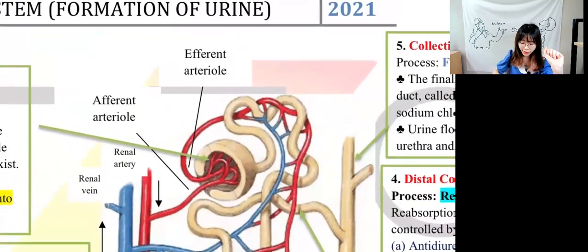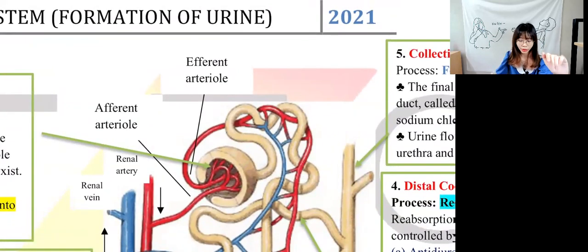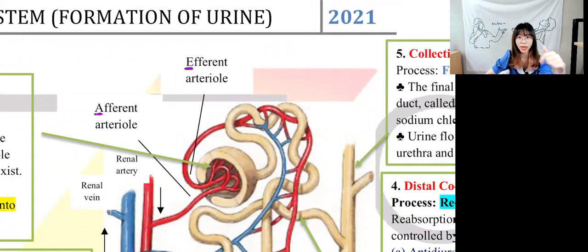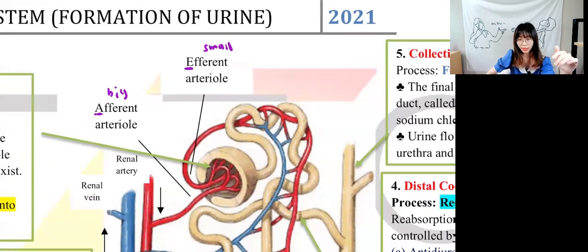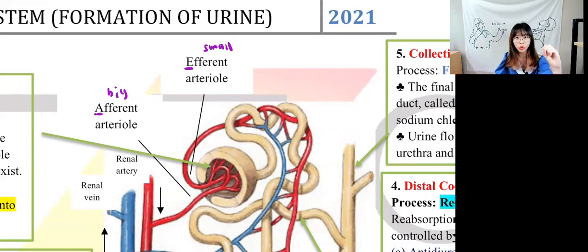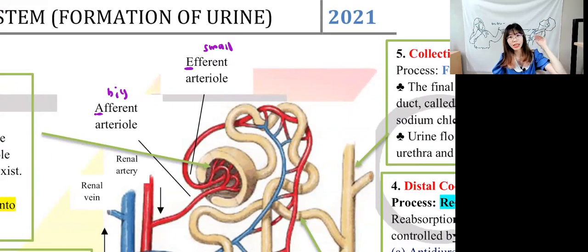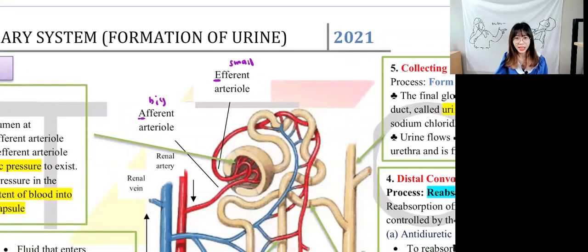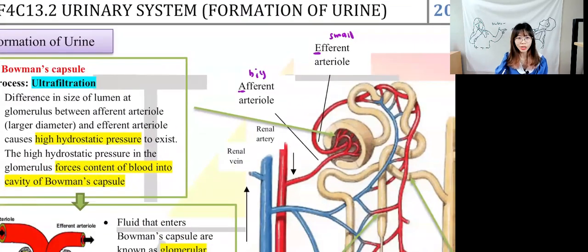The afferent arteriole comes first and is bigger in lumen size. The efferent arteriole comes next and has a smaller lumen. Because of this change from a bigger lumen to a smaller lumen, the pressure increases — just like when you squeeze a water pipe, a smaller opening creates higher pressure. We call this increased pressure hydrostatic pressure. If you've learned the lymphatic system, you'll recognize this term.